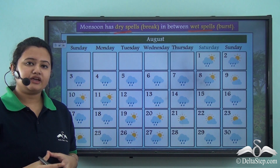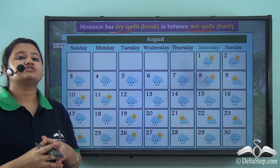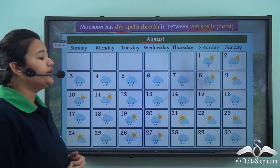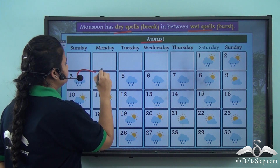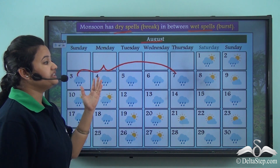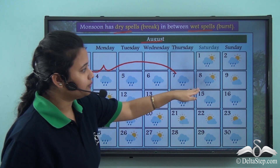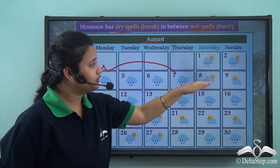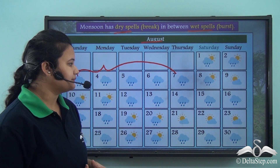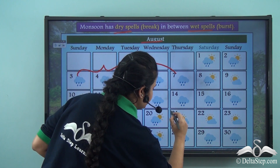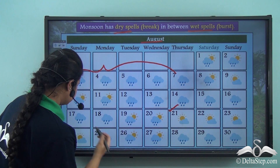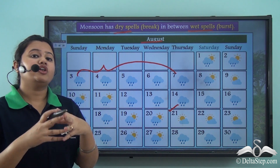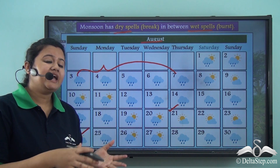This chart shows the weather conditions for the month of August, which corresponds to the monsoon season. From 3rd August to 7th August it rains continuously, whereas then it is followed by some days when it rains for a shorter time. Then it is followed by some days when the amount of rainfall decreases. From 21st August till 24th August it does not rain at all. So we find that rainfall occurs at some intervals of dry and wet spells.